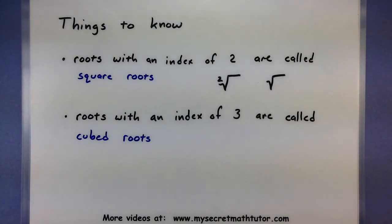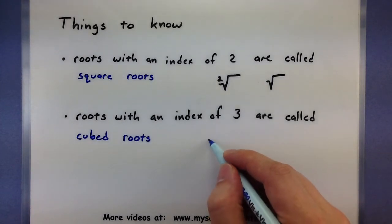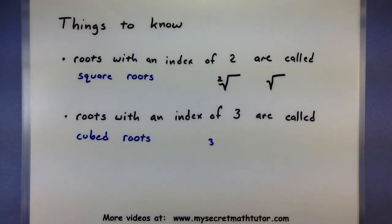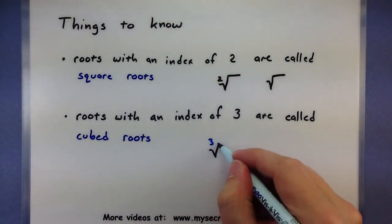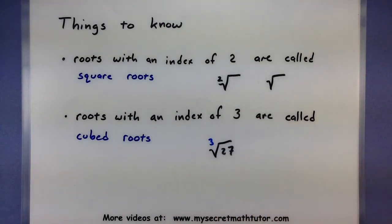Roots with an index of 3 are called cubed roots. So something like maybe the cubed root of 27. And even though that one is also very common, that one must have the 3 in there. That way we don't accidentally confuse it with the square roots.